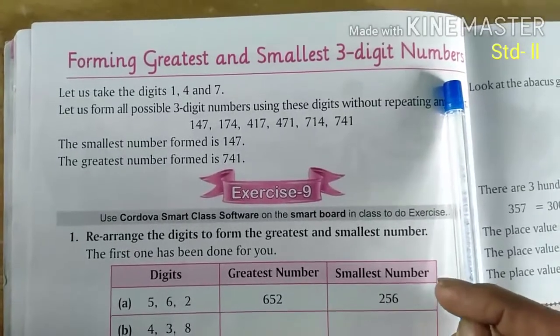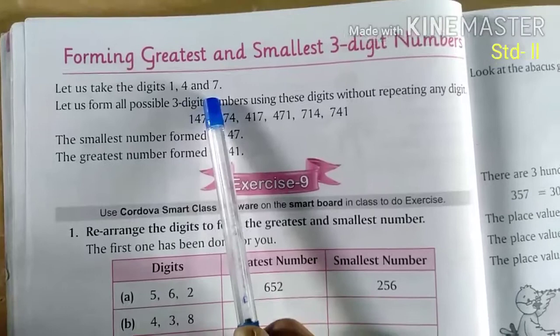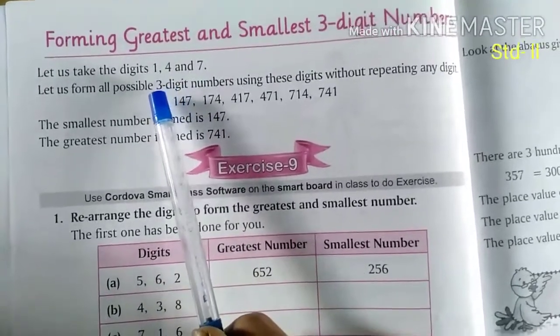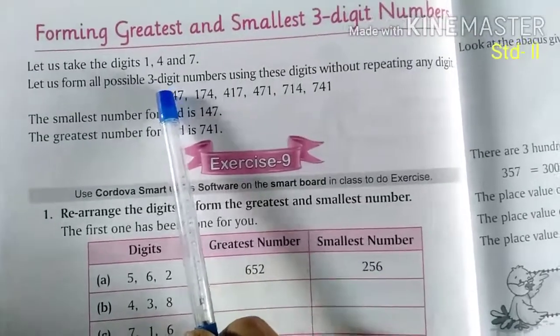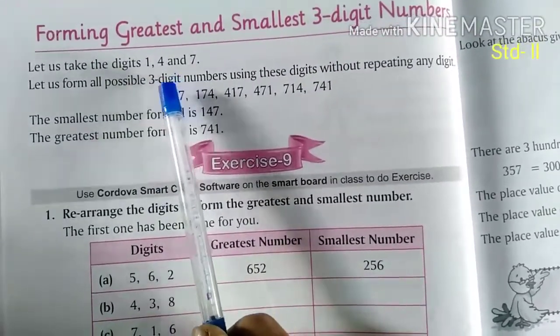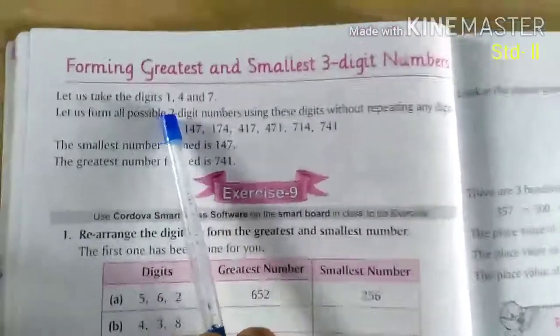3 digit numbers. See now they have given 3 numbers here: 1, 4, 7. So if you are going to form the smallest number, the smallest number will be 1, 4, 7 itself. Why? Because it is the smallest number which we can prepare from it. Now if you,